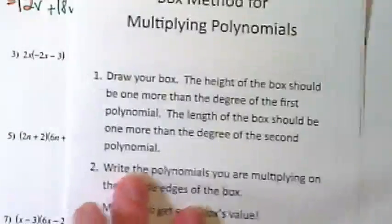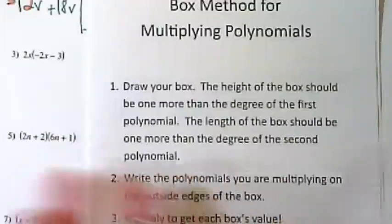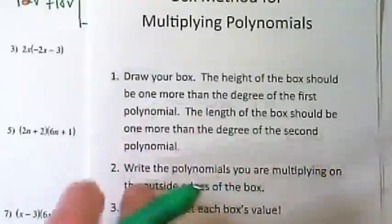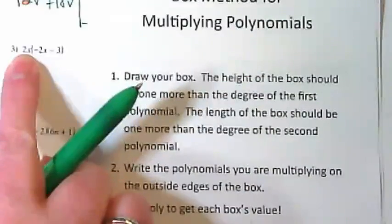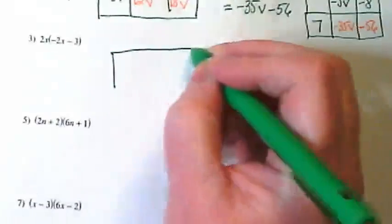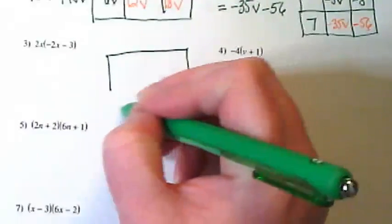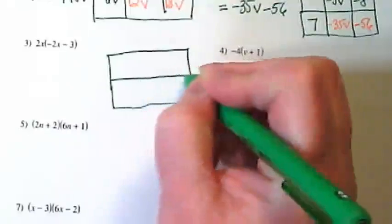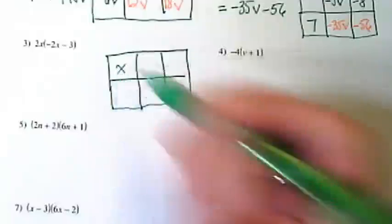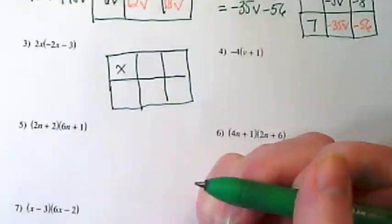Okay, so we're going to try numbers three and four on this practice sheet where we're going to draw our box first. We have a monomial times a binomial, so we're going to draw a box that is two up and three across. Again, this box here is just kind of a blank to remind us that we're multiplying.